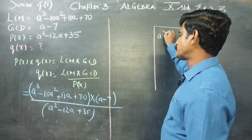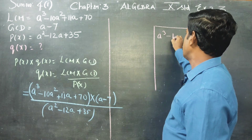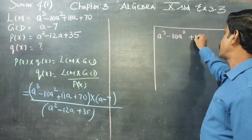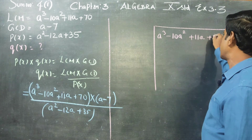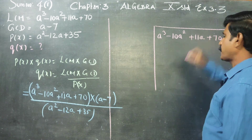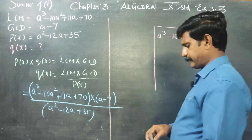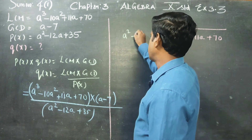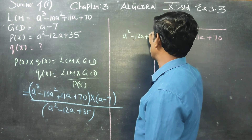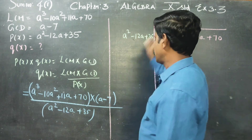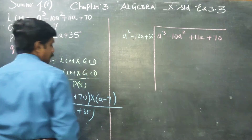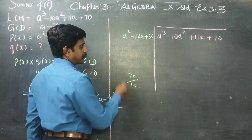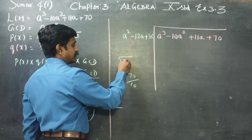You have to divide the cubic polynomial A cubed minus 10A squared plus 11A plus 70 by A squared minus 12A plus 35.